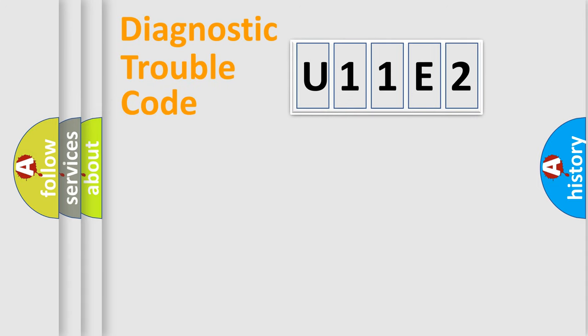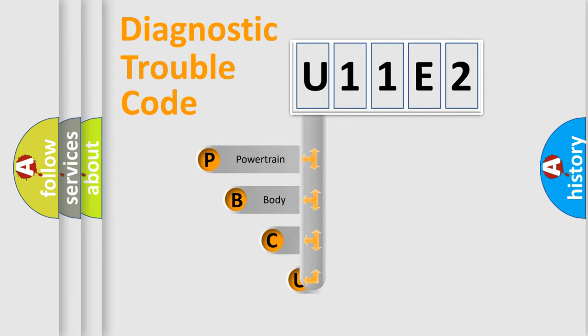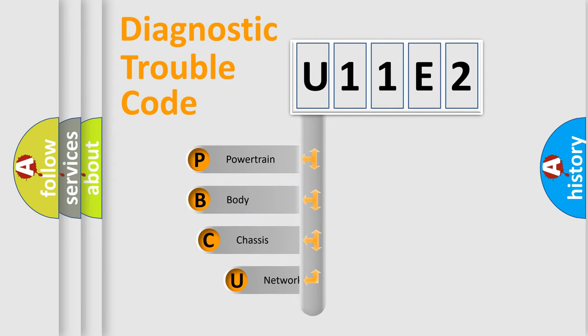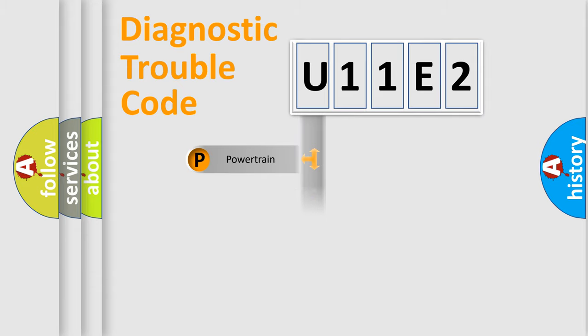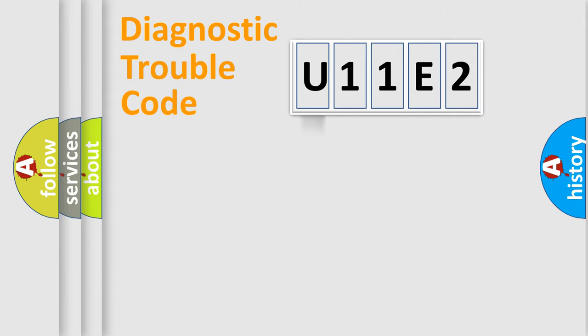Let's do this. First, let's look at the history of diagnostic fault code composition according to the OBD2 protocol, which is unified for all automakers since 2000. We divide the electric system of an automobile into four basic units: Powertrain, Body, Chassis, and Network.